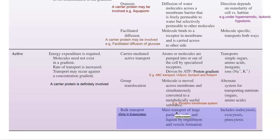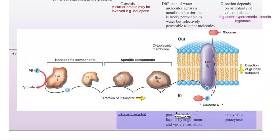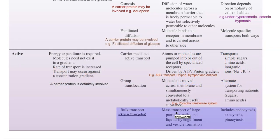The final important form of active transport in the cell is group translocation. Molecules are moved across the membrane and simultaneously converted into metabolically useful substances. For example, glucose is converted into glucose phosphate after moving inside the cell. This is accomplished by the phosphotransferase system, which is involved in transporting glucose inside the cell.